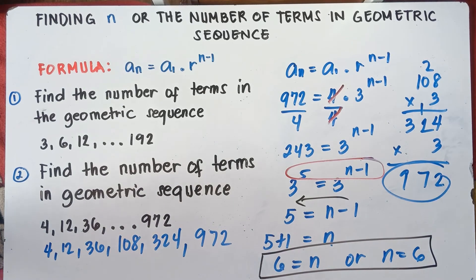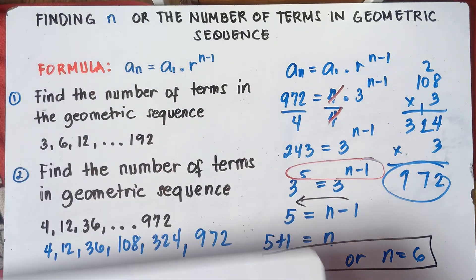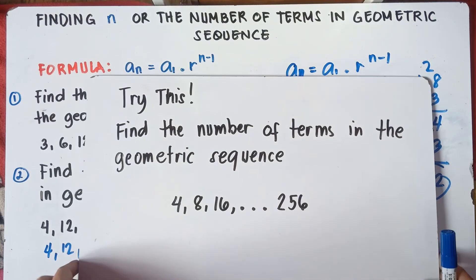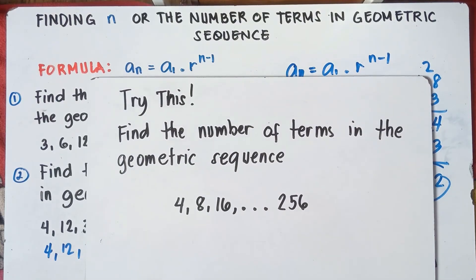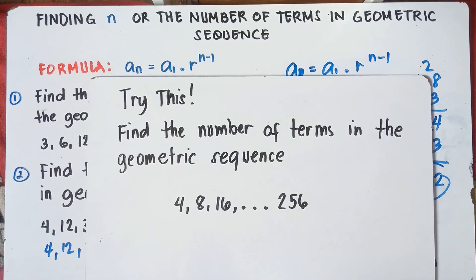That's how you find the number of terms. Try this one and put your answer in the comment section below: find the number of terms in the geometric sequence 4, 8, 16, and the last term is 256. Once again, this is Teacher MJ. I hope you learned something new today. Don't forget to share, like, and subscribe. Bye-bye!